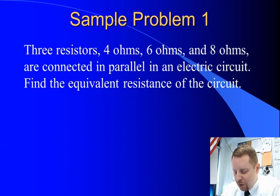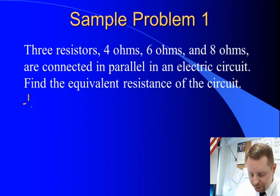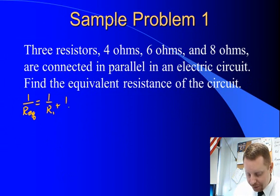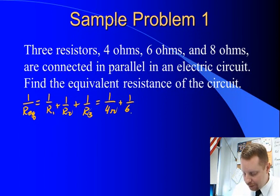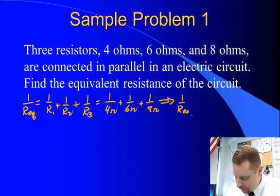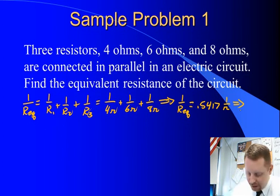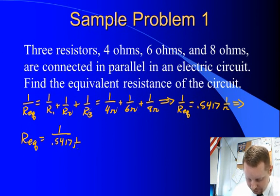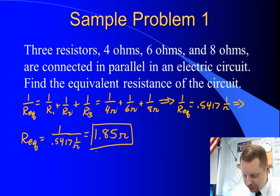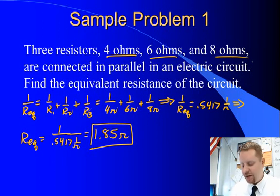Sample problem: three resistors — 4 ohms, 6 ohms, and 8 ohms — are connected in parallel in an electric circuit. Find the equivalent resistance of the circuit. Using 1/R_eq = 1/4 + 1/6 + 1/8, we get 1/R_eq ≈ 0.5417 inverse ohms. Therefore R_eq = 1/0.5417 ≈ 1.85 ohms. And to check our answer, 1.85 ohms is less than 4, 6, and 8 ohms — so that works.